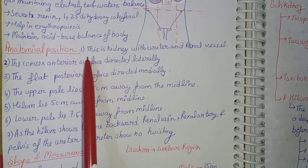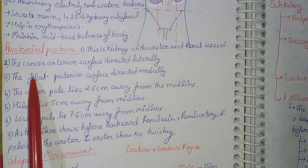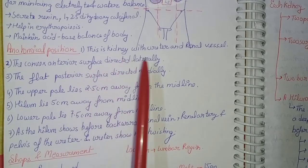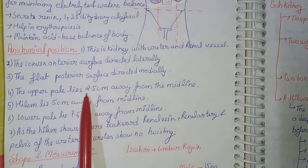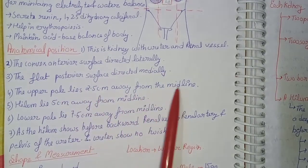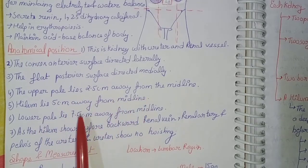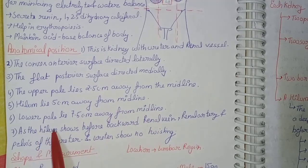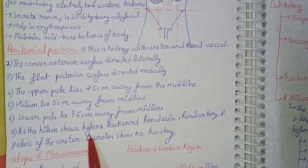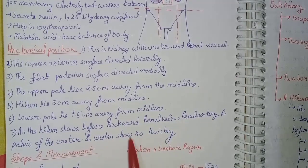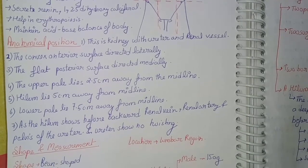Coming to the anatomical position of the kidney: the convex anterior surface is directed laterally and the flat posterior surface is directed medially. The upper pole lies 2.5 cm away from the midline, the hilum lies 5 cm away from the midline, and the lower pole lies 7.5 cm away from the midline. The hilum transmits, from before backward: renal vein, renal artery, and the pelvis of the ureter. The ureter shows no twisting.